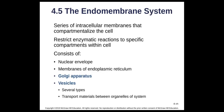The endomembrane system is a set of membrane-bound compartments inside the cell that helps restrict enzymatic reactions to specific parts of the cell. It consists of the nuclear envelope, the endoplasmic reticulum, the Golgi apparatus, and vesicles. Vesicles come in many kinds — some transport materials between organelles, some between the outside world and the cell, and vice versa.